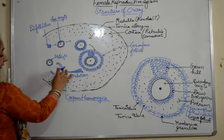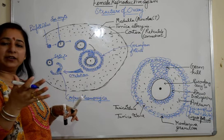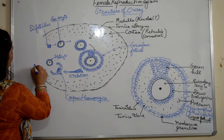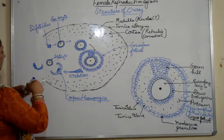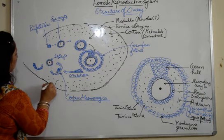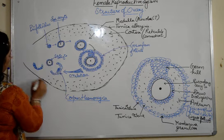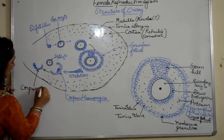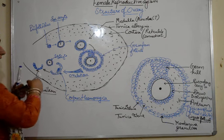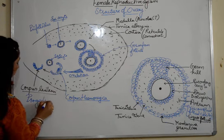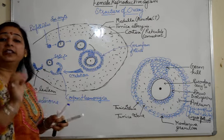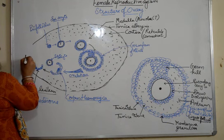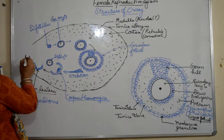The corpus haemorrhagica forms because of the rupturing of blood vessels and blood loss. Those blood vessels then heal and clot, and the structure formed after that clotting is called the corpus luteum — a very important structure in the ovary. Corpus luteum acts as an endocrine gland releasing the hormone progesterone. The corpus luteum persists in the body of the female if fertilization occurs, but if there is no fertilization, the corpus luteum degenerates and shrinks to form a structure known as corpus albicans.